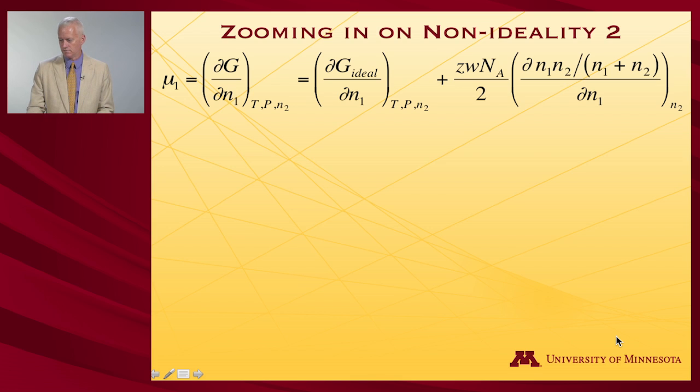So the chemical potential of component one is the partial derivative of the free energy with respect to that component. And I know it's the partial derivative of the ideal solution with respect to component one, plus the partial derivative of this term. That's the non-ideal term. So I'll do a little bit of differential calculus. When I take the partial derivative of this quotient, this is f over g. So here's f prime g minus g prime f all over g squared. Then I will move out a factor of n₂ over n₁ plus n₂ in front, which gives me n₂ squared over (n₁+n₂)² equals x₂ squared.